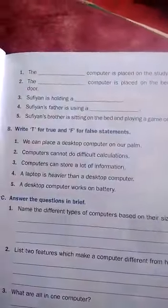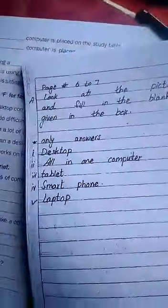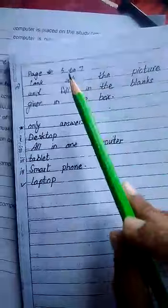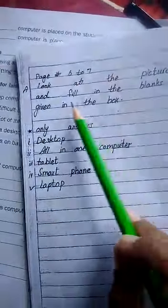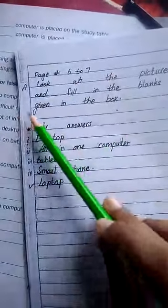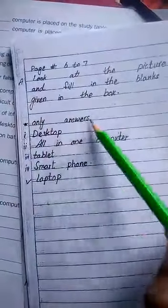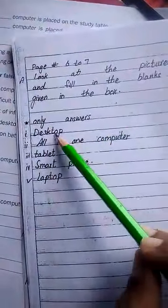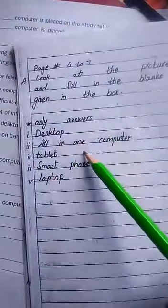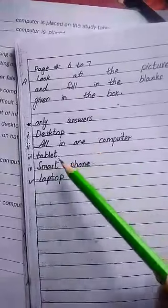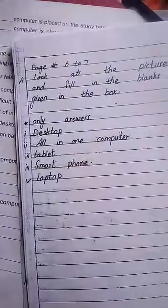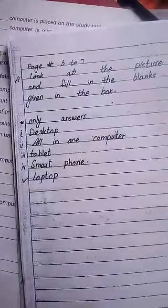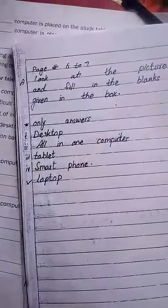After you fill in the blanks, match your answers. Page number 6 or 7, part A only. The answers are: desktop computer, all-in-one computer, tablet, smartphone, laptop. Match your answers.